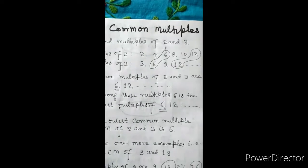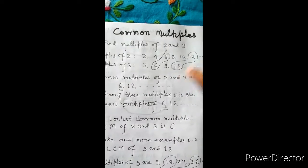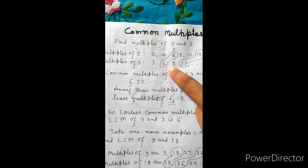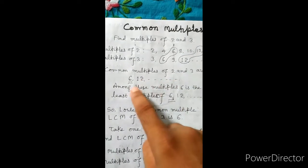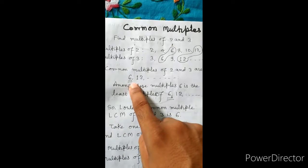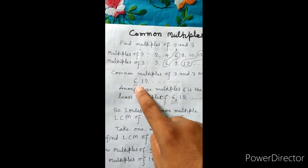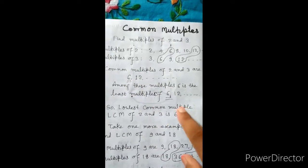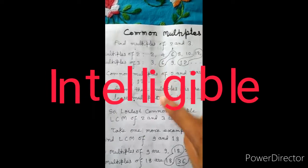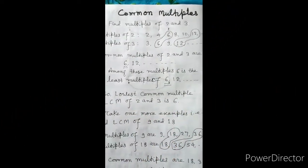Common multiples of 2 and 3 are 6, 12 and so on. Among these common multiples, 6 is the smallest. So 6 is the least common multiple, or the lowest common multiple of 2 and 3. Therefore, LCM of 2 and 3 is 6.